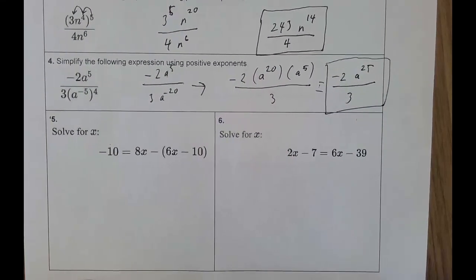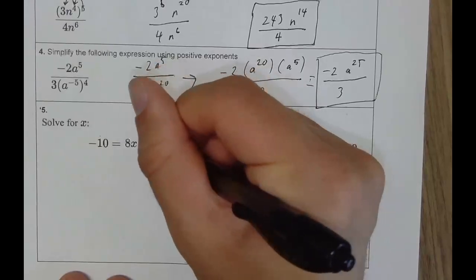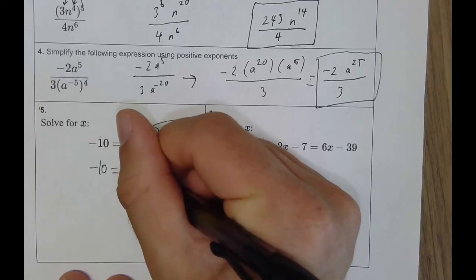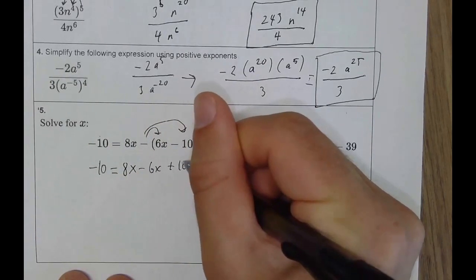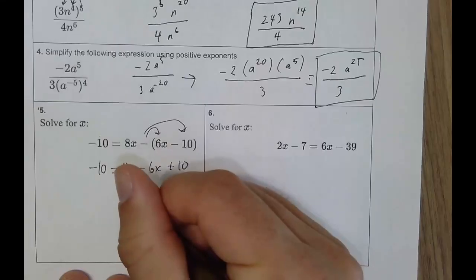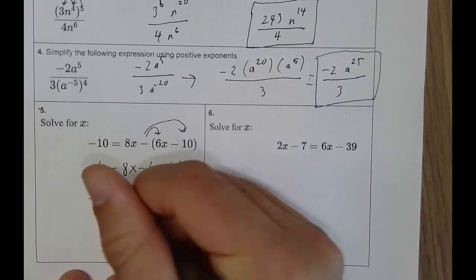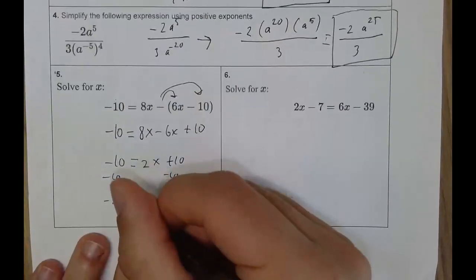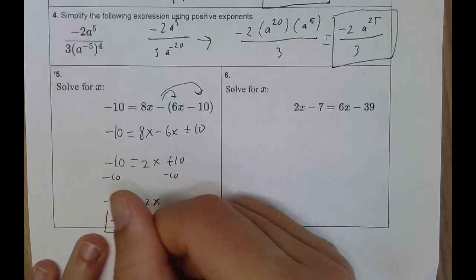Solving for x — hopefully review from algebra. We want to get x alone. Start by distributing the negative: we get 8x minus 6x plus 10. Make sure you distribute to both terms — that's a common mistake. 8x minus 6x is 2x, so 2x plus 10 equals negative 10. Subtract 10 from both sides: negative 20 equals 2x. Divide both sides by 2: x equals negative 10.